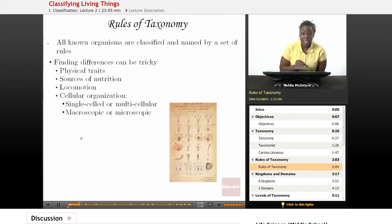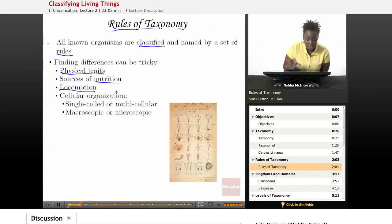There are certain rules about how to classify organisms. The rules of taxonomy include that all known organisms are classified and named by a set of rules. Finding differences can be tricky. They can be classified by physical traits, sources of nutrition, and locomotion or how they move.